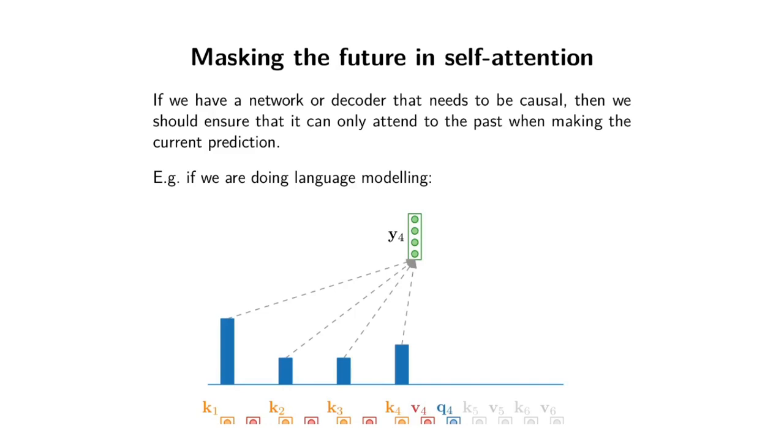You can't really cheat by training a model on full sentences. You need to make sure that if you're using an attention-based model, it doesn't look into the future when predicting the current output.